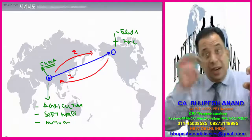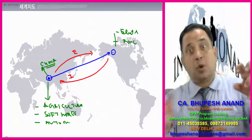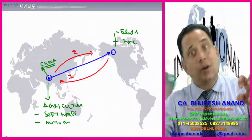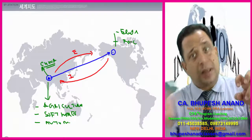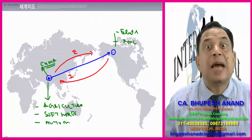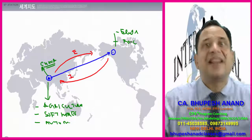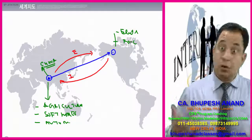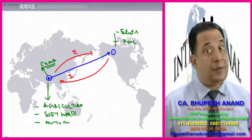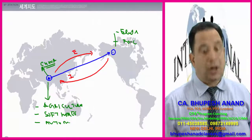If one country X allows exports and imports from another country, and that other country also allows exports and imports, this type of scenario is named as a free trade scenario. No doubt it has some costs as well, which we will examine.